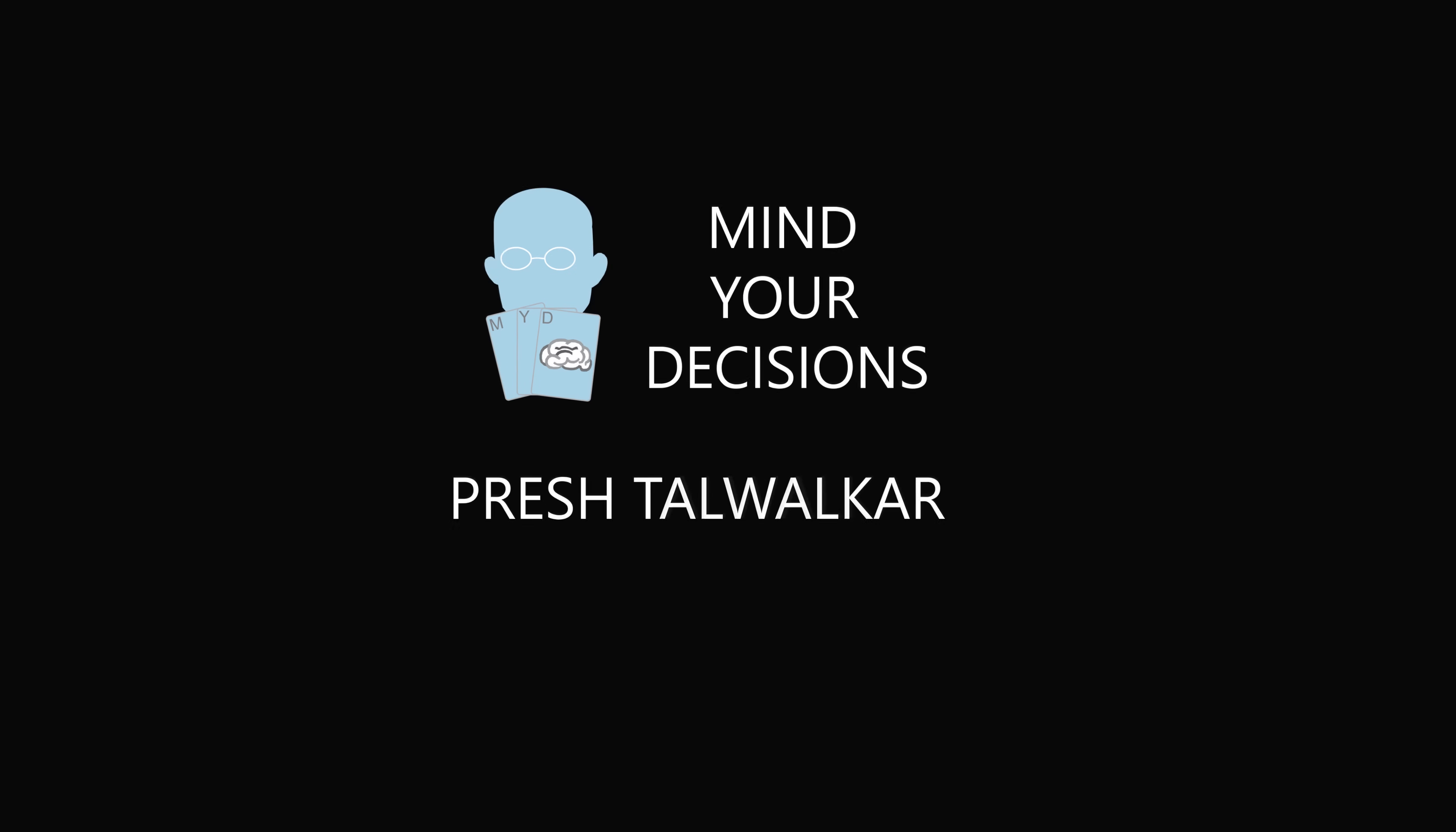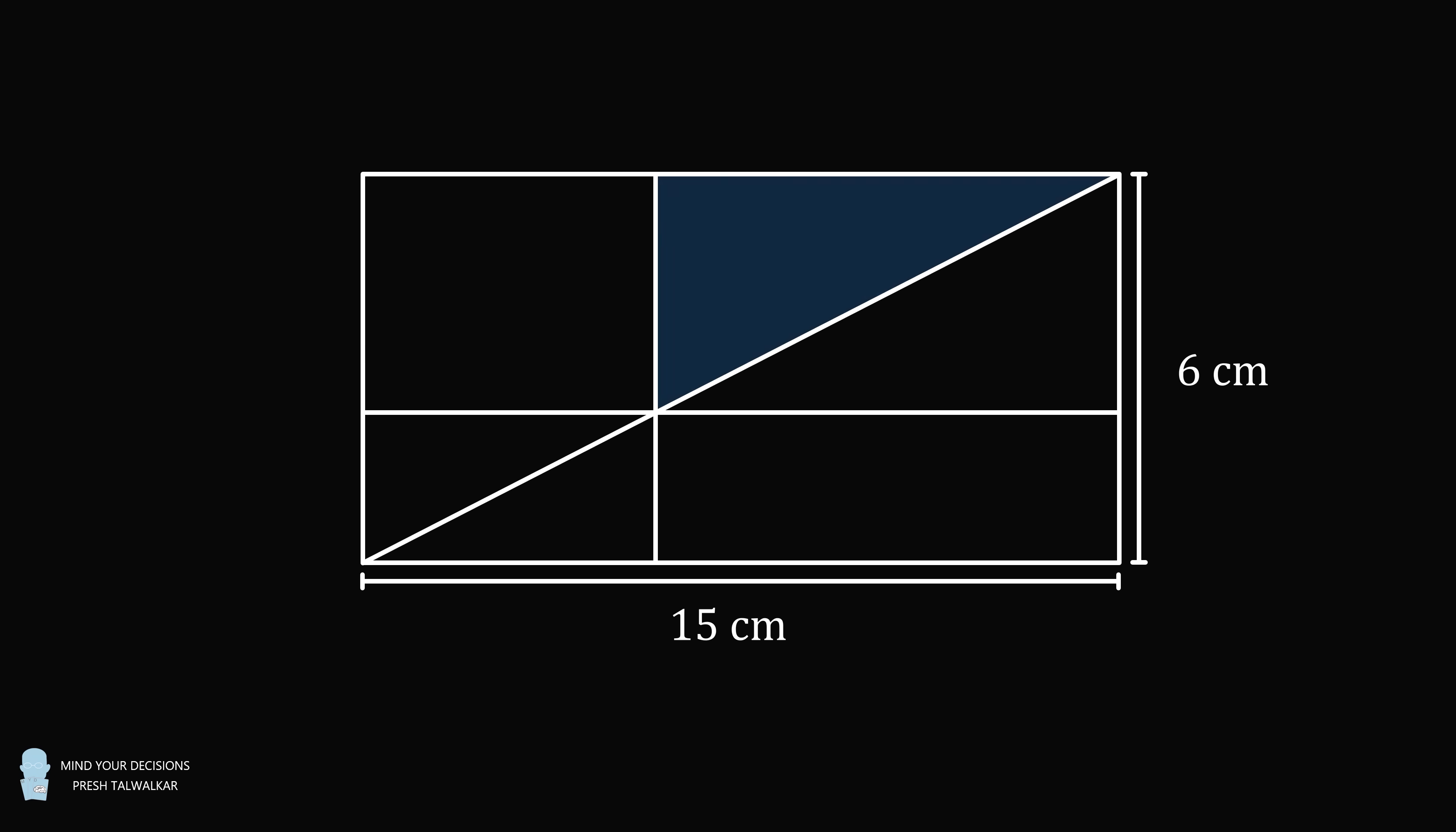Hey, this is Presh Tollwalker. A rectangle has dimensions of 15 cm and 6 cm. Construct the diagonal of the rectangle, and construct the following horizontal and vertical lengths. Suppose this upper triangle has an area of 16 cm², and this lower triangle has an area of 4 cm².